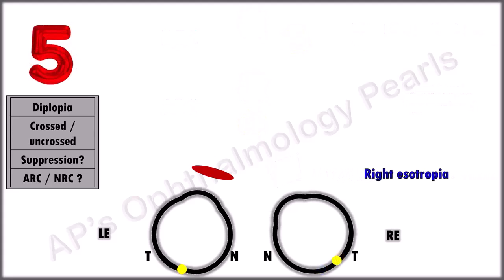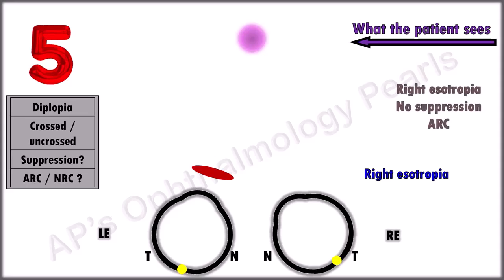Scenario 5. This patient has an esotropia. With the red glass test, this is what the patient sees. So there is no diplopia. Suppression is absent. There is a fusion response. ARC? Yes. A fusion response in the presence of a tropia indicates the presence of an ARC.